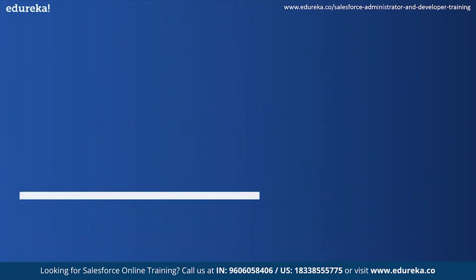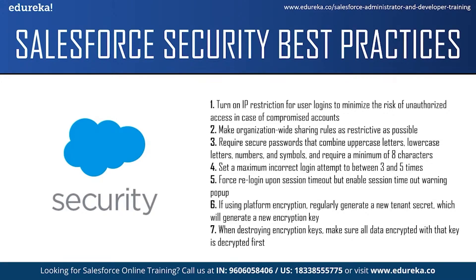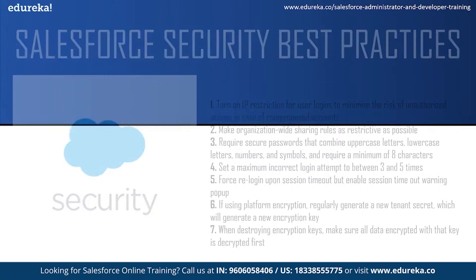Those were some prominent Salesforce security features. Now for the final topic: Salesforce security best practices. First, turn on IP restriction for user logins to minimize the risk of unauthorized access in case of compromised accounts. Second, make organization-wide sharing rules as restrictive as possible while allowing normal business functions, and use role hierarchy, sharing rules and permission sets to extend access beyond those defaults. Third, require strong passwords combining uppercase, lowercase, numbers and symbols with a minimum of eight characters. Fourth, set the maximum incorrect login attempts to between three and five times. Fifth, ensure users re-login upon session timeout but enable session timeout warning popups. Sixth, if using platform encryption, regularly generate a new tenant secret to create a new encryption key, and when destroying keys ensure all data encrypted with that key is decrypted first.